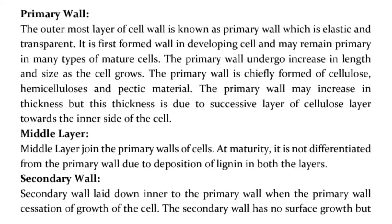The outermost layer of the cell wall is known as the primary wall, which is elastic and transparent. It is the first-formed wall in a developing cell and may remain as the primary wall in many types of mature cells. The primary wall undergoes increase in length and size as the cell grows. It is chiefly formed of cellulose, hemicelluloses, and pectic material. The primary wall may increase in thickness due to successive layers of cellulose laid towards the inner side of the cell. The middle layer joins the primary walls of cells, and at maturity it is not differentiated from the primary wall due to deposition of lignin in both layers.